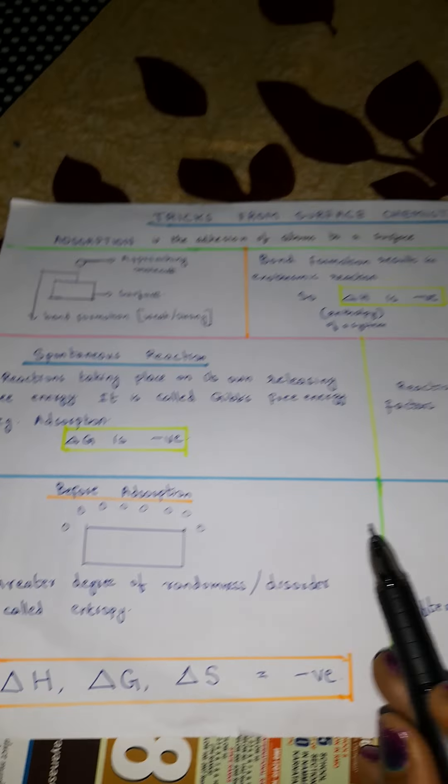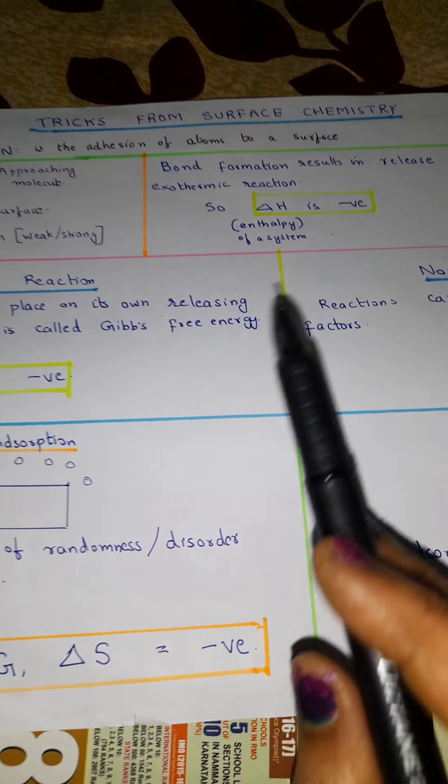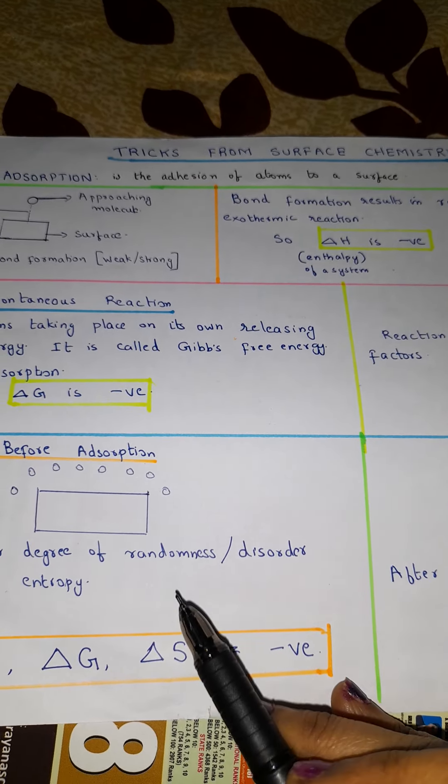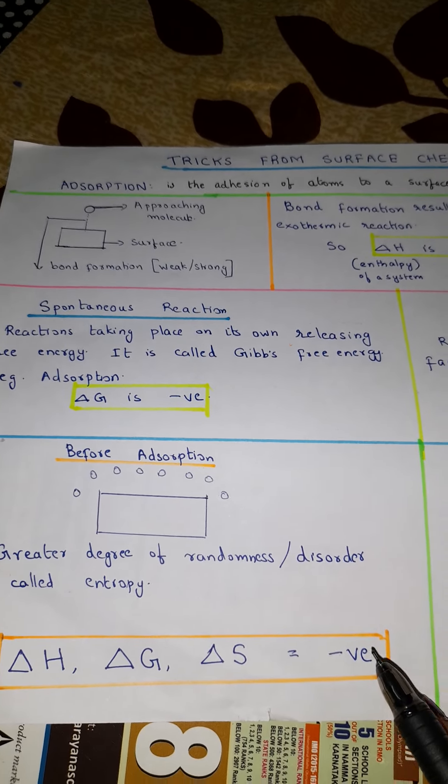So this is an easy trick to remember that these three things like enthalpy and Gibbs free energy, delta G, then finally delta S, entropy, these three are negative.